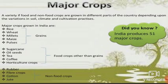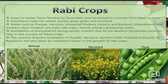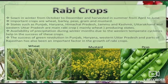Rabi crops are sown in winter from October to December and harvested in summer from April to June. Important crops are wheat, barley, peas, gram and mustard. States such as Punjab, Haryana, Himachal Pradesh, Jammu Kashmir, Uttarakhand and western Uttar Pradesh are main Rabi crop producing states. Availability of precipitation during winter months due to western temperate cyclones helps in the success of these crops, requiring winter rainfall in the northern region of India. The success of the Green Revolution in Punjab, Haryana, western Uttar Pradesh and parts of Rajasthan has also been an important factor.